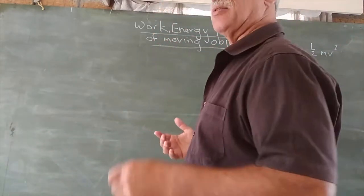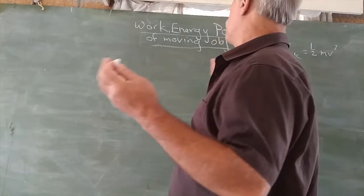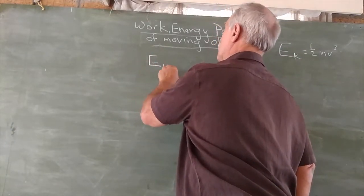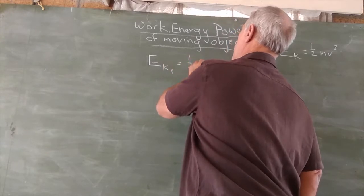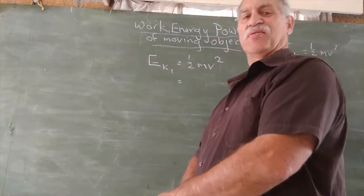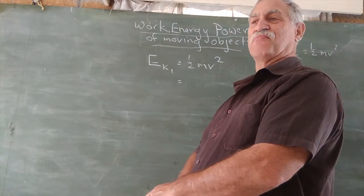Let's take a case. We have an object that is moving. Let's say E case 1 is 1/2 mv². So we have case 1, where an object has energy 1/2 mv².